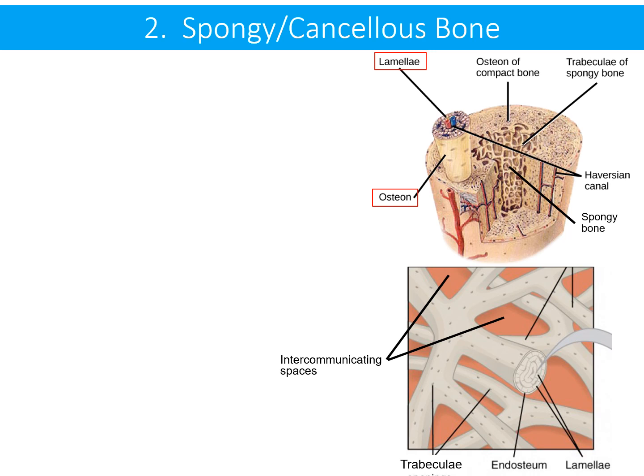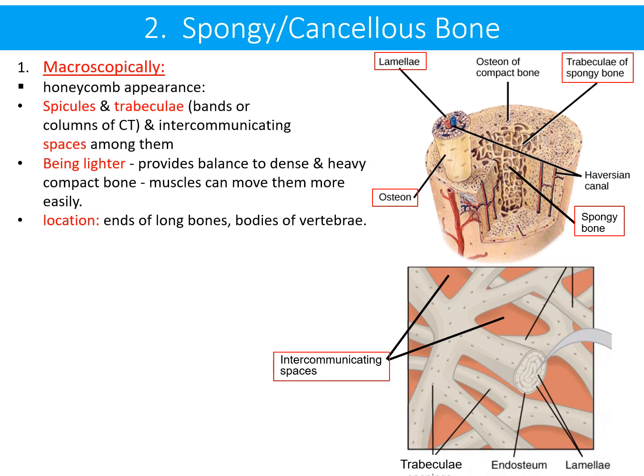The second type of bone tissue is spongy or cancellous bone. Macroscopically it appears as a honeycomb and consists of spicules and trabeculae with intercommunicating spaces among them. Such a structure makes them lighter, providing balance to the dense and heavy compact bone, and muscles can move these bones more easily.